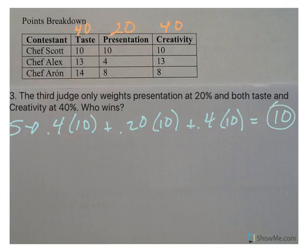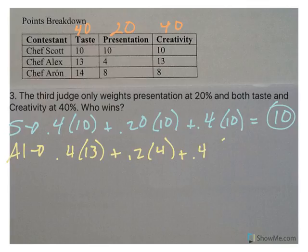Then we go to Alex. 40% times 13 plus 20% times 4 plus 40% times 13 gives Alex a score of 11.2.